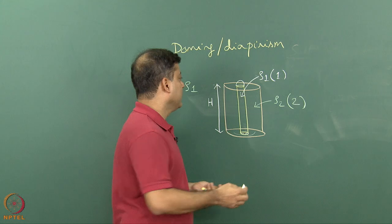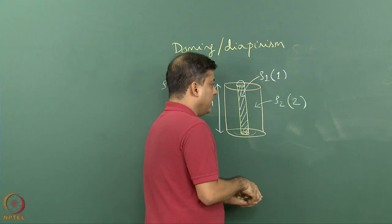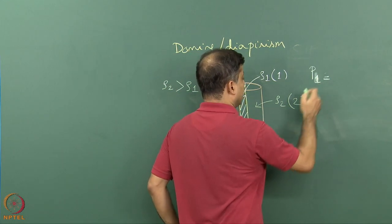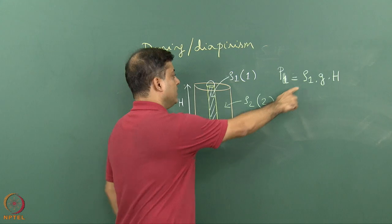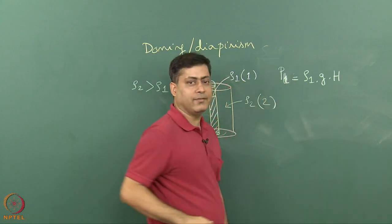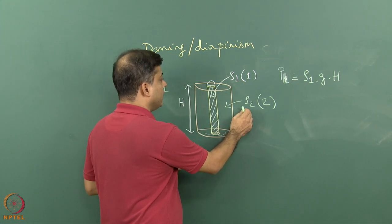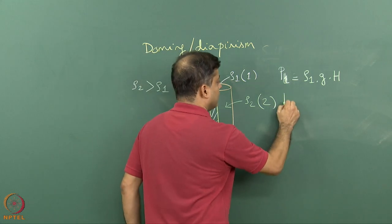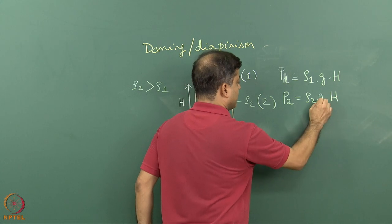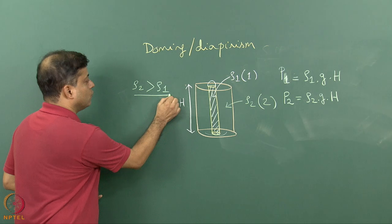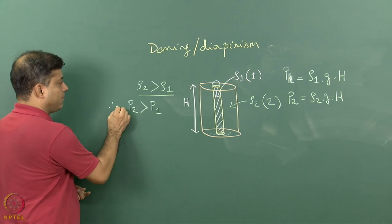Let us look at how much pressure or stress is exerted by fluid one in this column. I can write: fluid one pressure is given by rho one into g into H, where rho one is the density of fluid one, g is the acceleration due to gravity, and H is the height. The pressure exerted by fluid two is p two equals rho two into g into H.